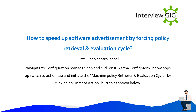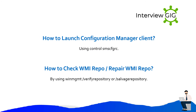How to speed up software advertisement by forcing policy retrieval and evaluation cycle: First, open Control Panel. Navigate to the Configuration Manager icon and click on it. When the Config Manager window opens, switch to the Action tab and initiate the machine policy retrieval and evaluation cycle by clicking the 'Initiate Action' button.